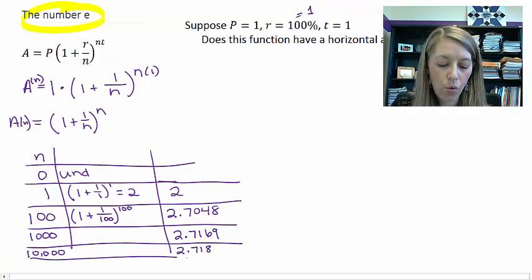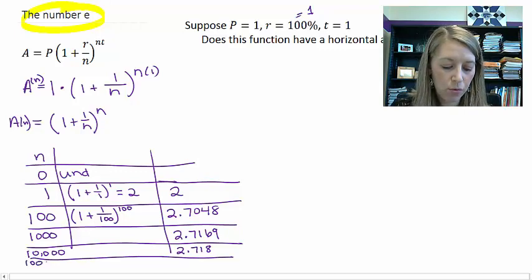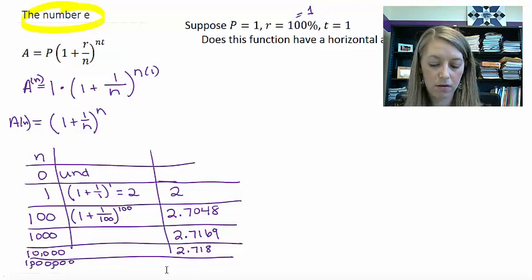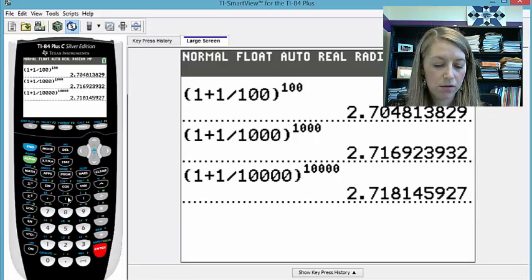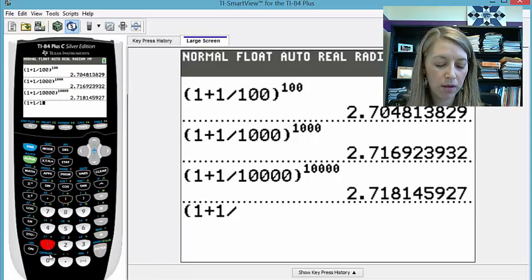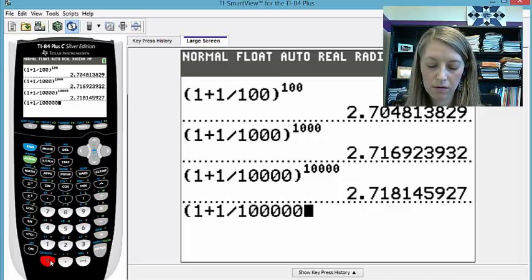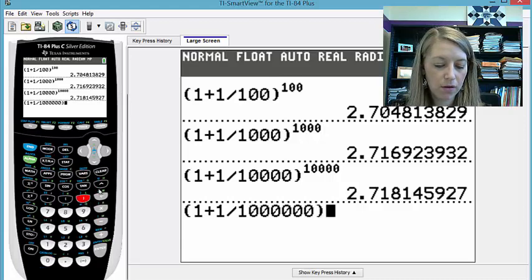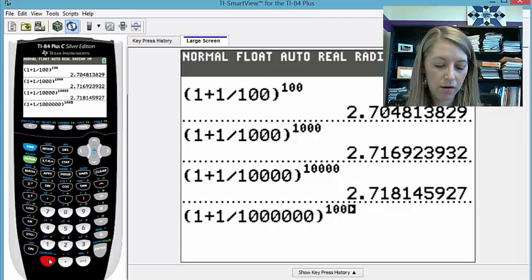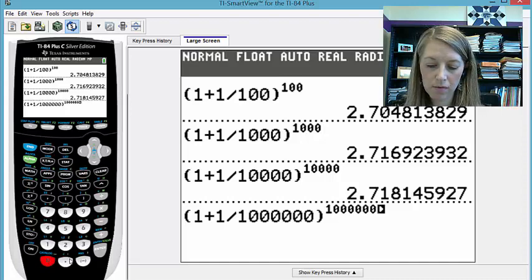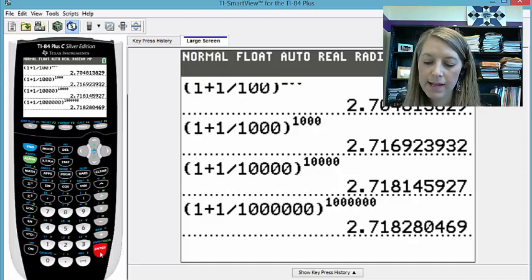And we'll do it one more time. How about let's go really big this time and we'll go 1,000,000. So 1 plus 1 over 1,000,000 to the 1,000,000th power. And see we get 2.71828.